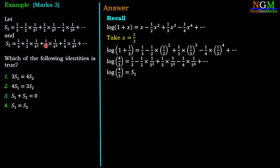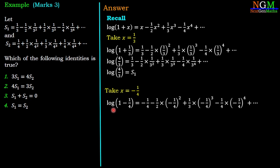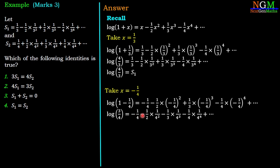Now can we convert this series into S2? In S2 all the terms are positive, so we need to take x negative. Which value of x converts log(1 + x) into S2? If you know, put it in the comment box. Take x = −1/4. Then log(1 − 1/4) = −1/4 − 1/2 · (1/4)² − 1/3 · (1/4)³ − 1/4 · (1/4)⁴, which simplifies to log(3/4) = −1/4 − 1/2 · (1/4)² − 1/3 · (1/4)³ − 1/4 · (1/4)⁴.